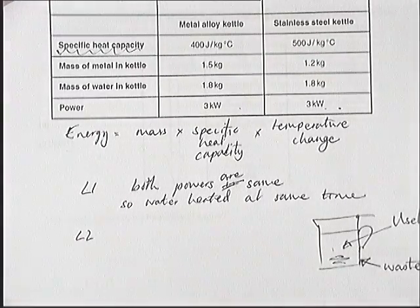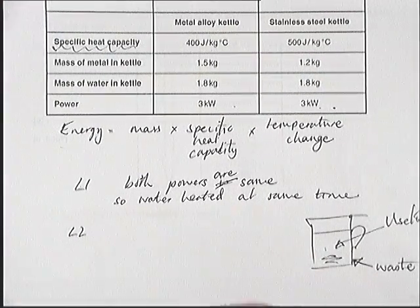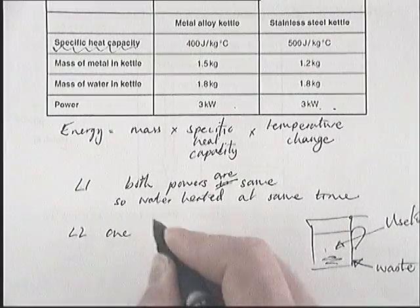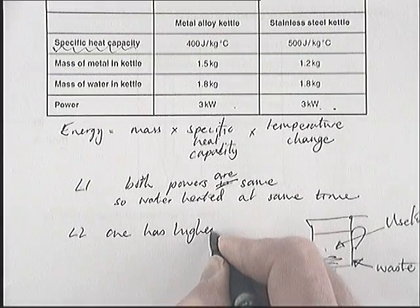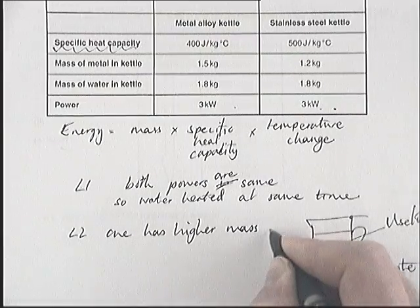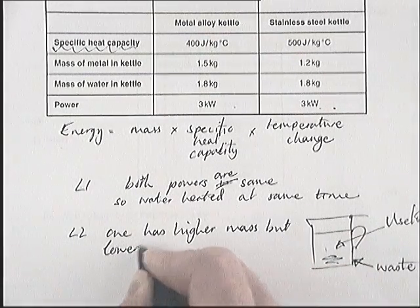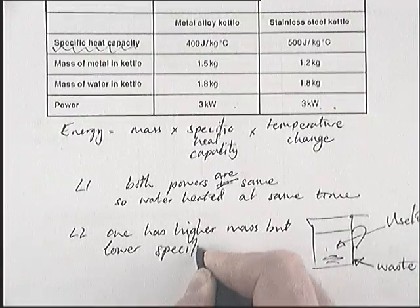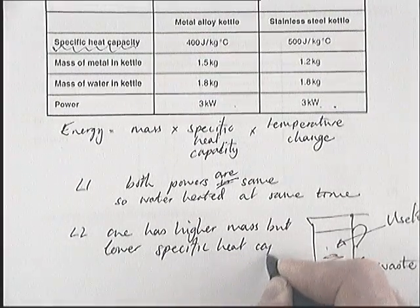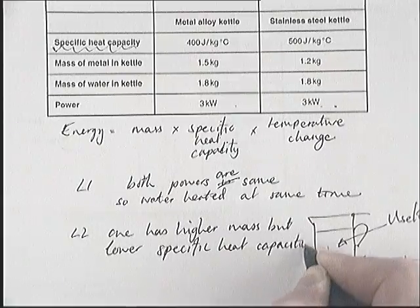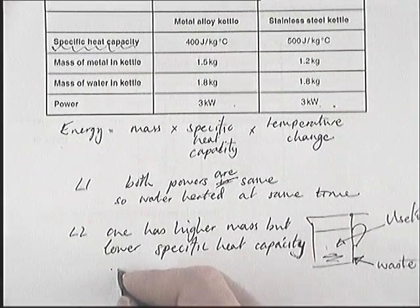Level 2 answers didn't necessarily do a calculation, but they said: well, one has a higher mass but a lower specific heat capacity, and the other is the other way around, so it cancels out.